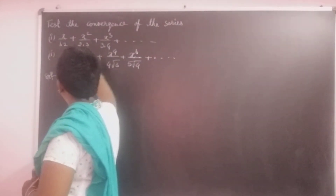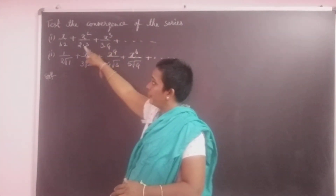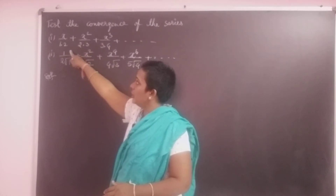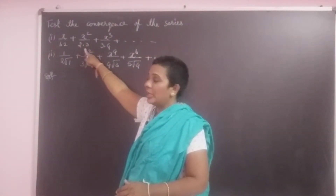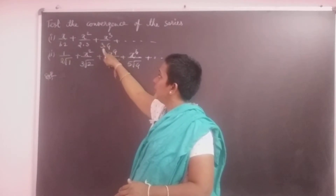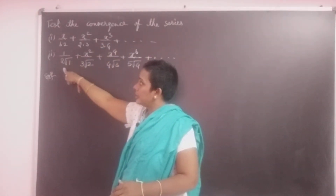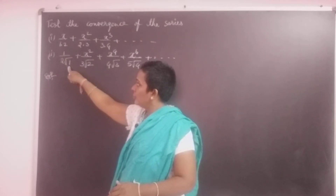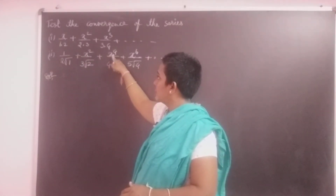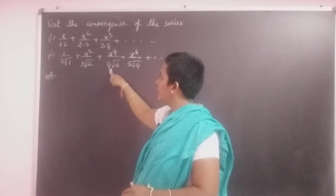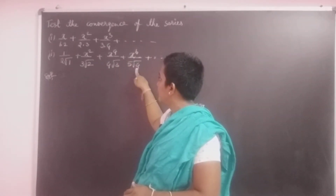Here I am taking two problems. Test the convergence of the series. The first one is x/(1·2) + x²/(2·3) + x³/(3·4) + ... The second one is 1/(2√1) + x²/(3√2) + x⁴/(4√3) + x⁶/(5√4) + ...